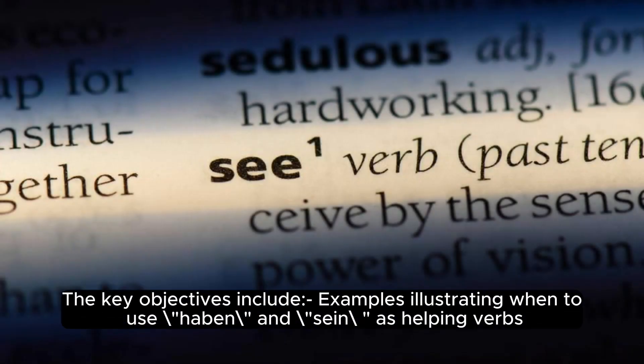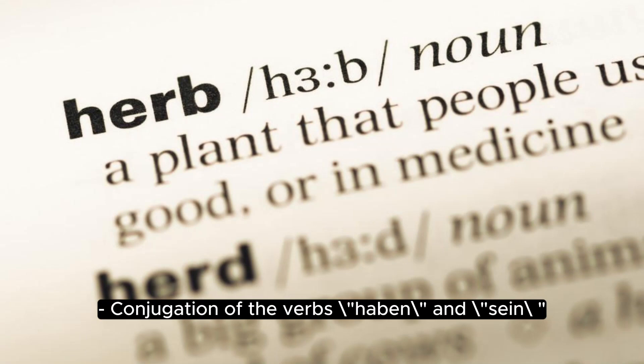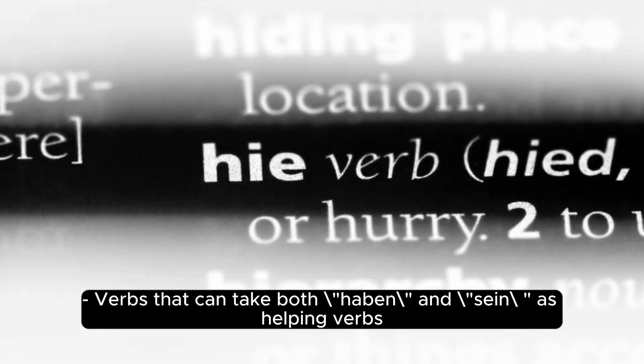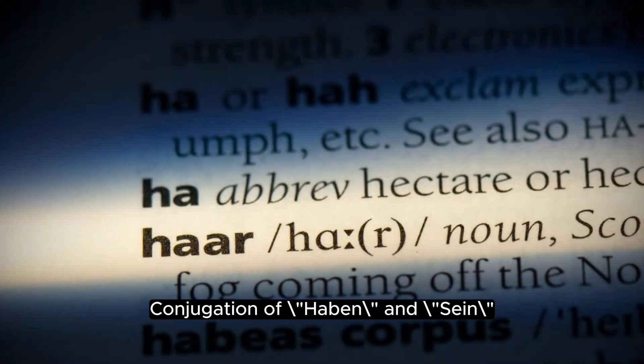The key objectives include: examples illustrating when to use Haben and Sein as helping verbs, conjugation of the verbs Haben and Sein, identifying verbs that take Sein based on changes in place or state, and verbs that can take both Haben and Sein as helping verbs.